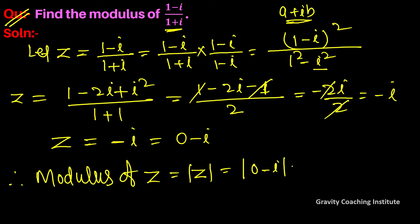0 minus iota. So this equals square root of (real part squared, which is 0 squared) plus (imaginary part squared, which is minus 1 whole squared). So this equals square root of 0 plus 1, which equals 1. That's the answer.